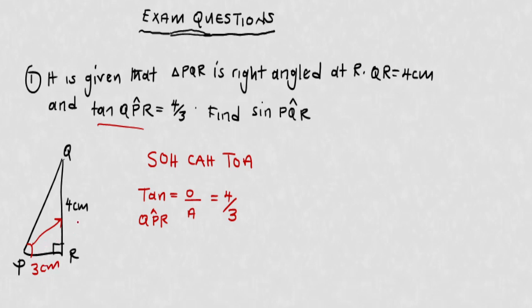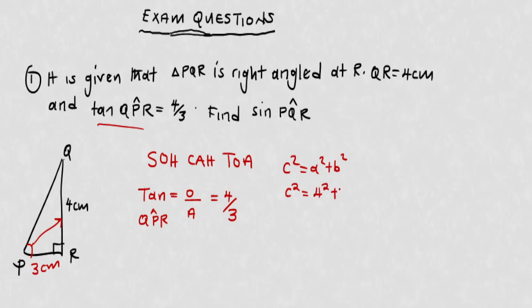Now in order to find the hypotenuse, we're going to use the Pythagoras theorem, which states that c squared equals a squared plus b squared, where c is the hypotenuse. So c squared equals — I'll pick a as 4 and b as 3.